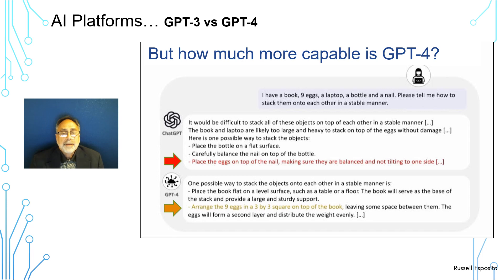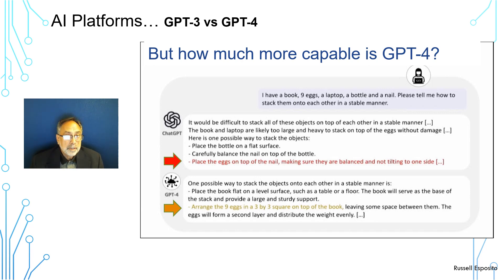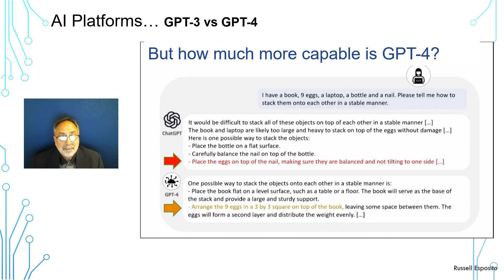Microsoft had a presentation where they wanted to compare ChatGPT, which is based on GPT-3, with the newer and more capable GPT-4. They gave both systems this problem: I have a book, nine eggs, a laptop, a bottle, and a nail. Please tell me how to stack them onto each other in a stable manner.